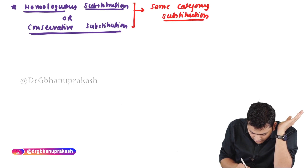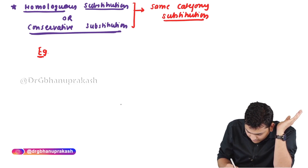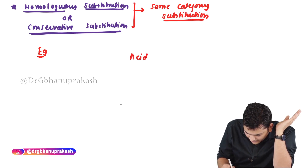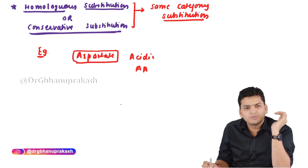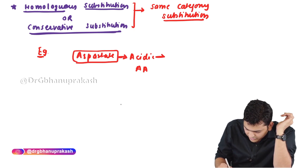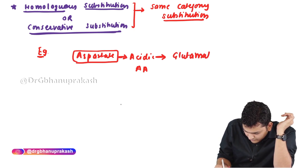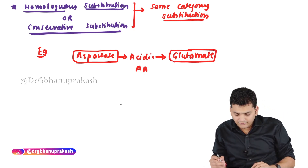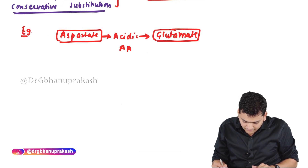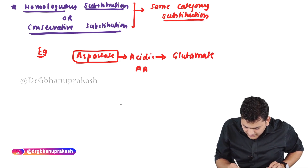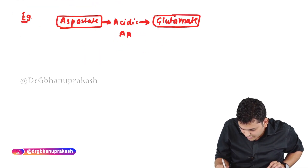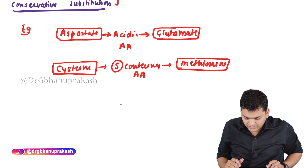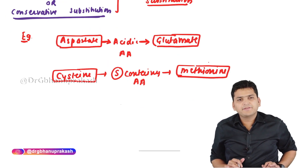For example, what will be the homologous substitution for aspartate? Aspartate is an acidic amino acid, so the homologous substitution is glutamate. For cysteine, which is a sulfur-containing amino acid, the homologous substitution is methionine — another sulfur-containing amino acid. This is the concept of homologous or conservative substitution.